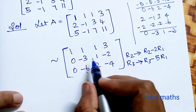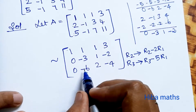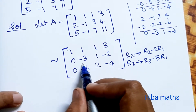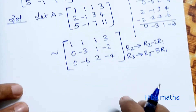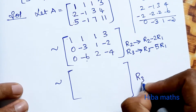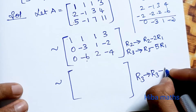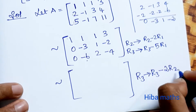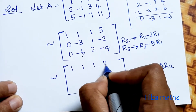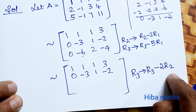Now we have R2 as [0, -3, 1, -2] and R3 as [0, -6, 2, -4]. We notice R3 is 2 times R2. We will change R3 to R3 minus 2 times of R2. R1 and R2 are not changing. R1: 1, 1, 1, 3. R2: 0, minus 3, 1, minus 2. Now R3 is going to change.